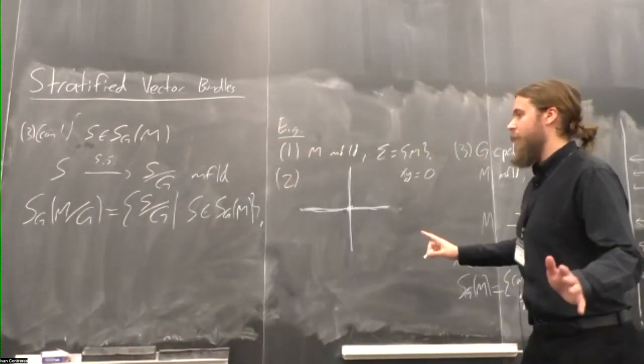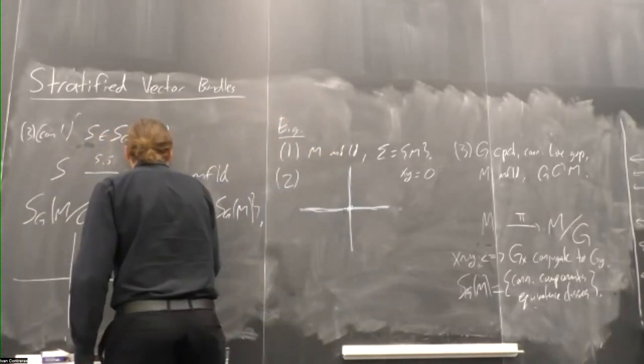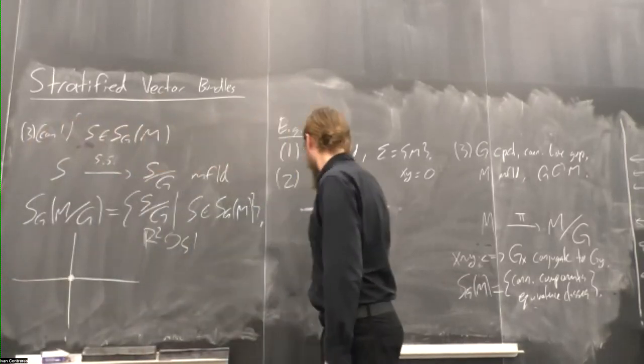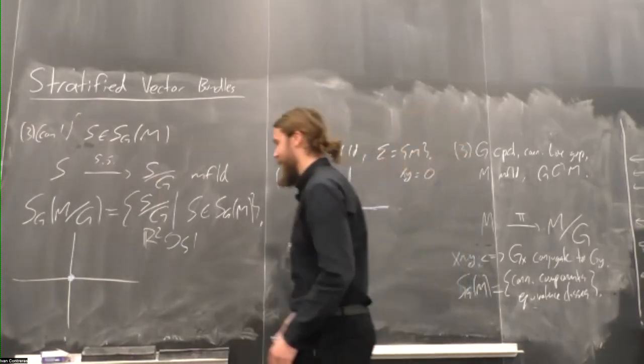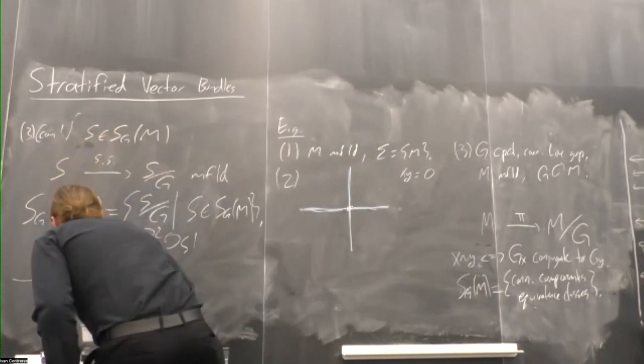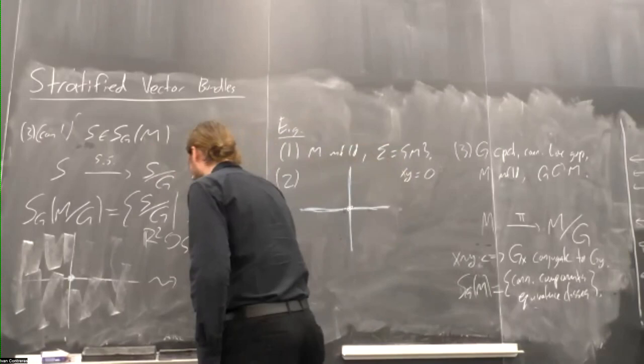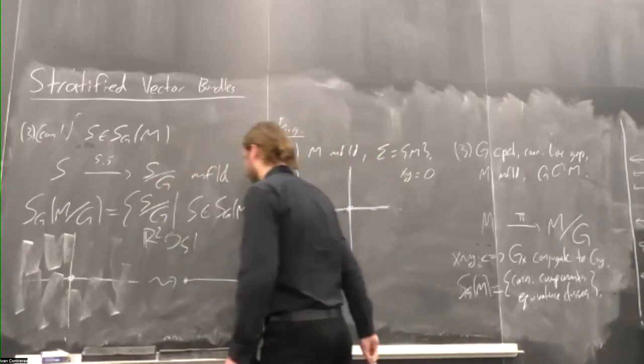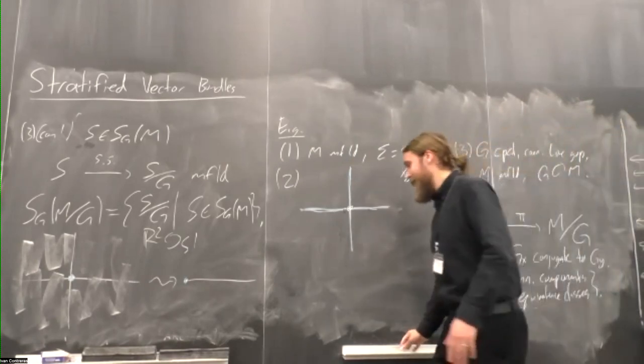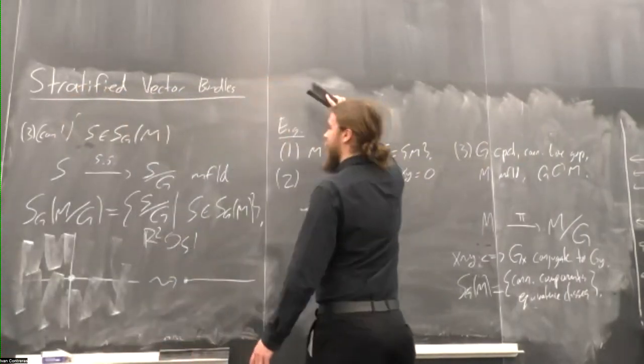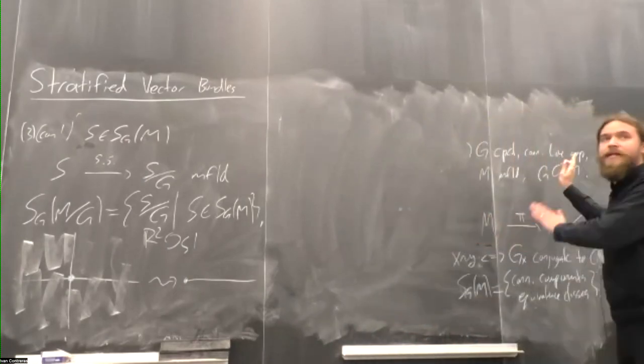Now just a real, real silly example. I mean, silly and very simple. I can draw it. Just take R2, and just have S1 act on it by rotating about the origin. Zero here obviously has stabilizer all of S1. So that will be one stratum, and then it acts freely everywhere else, so that gives us the rest of our stratification. And then, now if we pass to the quotient, well, this is very, very simple. The origin gets sent to a point. Very nice. And then the rest of it gets sent to this ray here. That's a very, very simple one, but you can do this anytime you have a compact group, compact connected Lie group. You can do it more generally with proper groupoids, but I don't need to go into that.